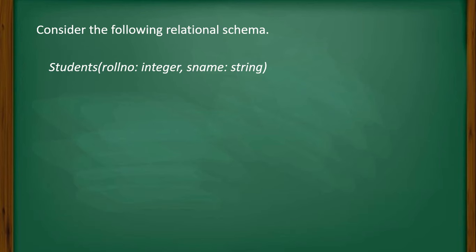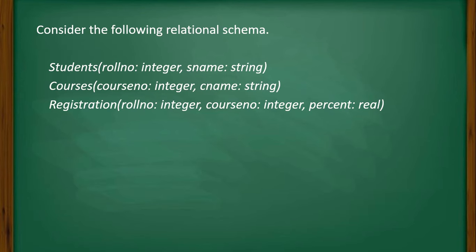Consider the following relational schema. The schema is given: Students has attributes roll number and student name; Courses has course number and course name; and Registration has roll number, course number, and percent — that is the percentage of marks scored by a student.